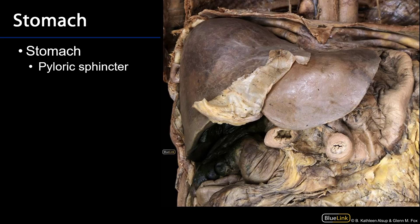Coming from the pyloric part of the stomach, which has been cut away here, we can see within it the pyloric sphincter. That's a congregation of smooth muscle that halts the progression of chyme between the stomach and the duodenum. Small amounts of chyme are ejected from the stomach into the duodenum for further digestion and absorption.